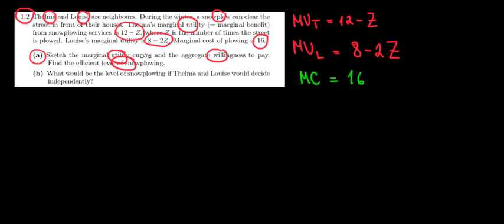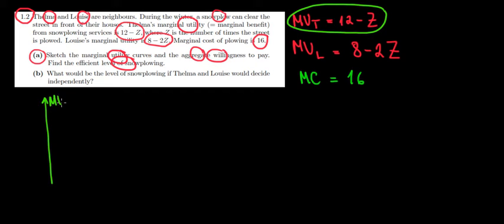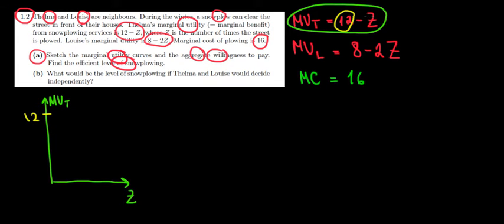Let's do the marginal utility curves separately and then for the aggregate. For Thelma, on the y-axis we have marginal utility and on the x-axis the level of snowplowing, Z. Just like a demand curve showing maximum willingness to pay, 12 is going to be the y-intercept. The slope is negative 1, meaning the Z-intercept is also 12. Connecting the two points gives us the marginal utility curve of Thelma.